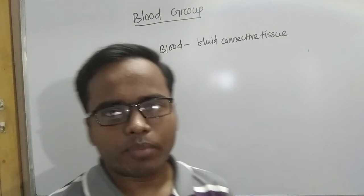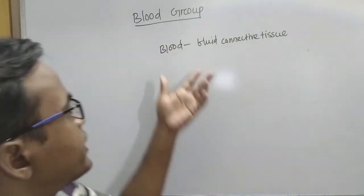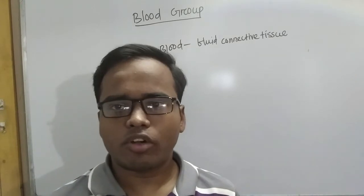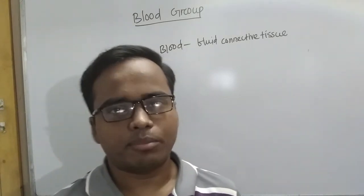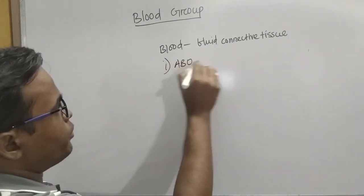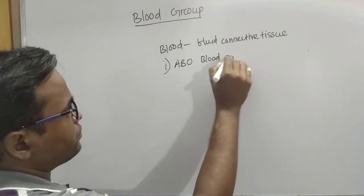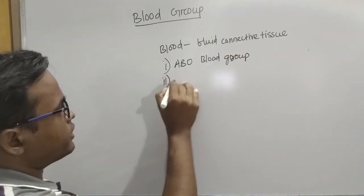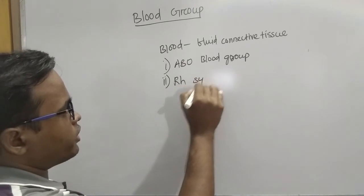Blood groups are divided into two types. The first is the ABO blood group system, and the second one is the RH system.